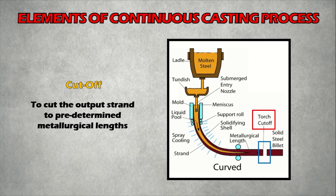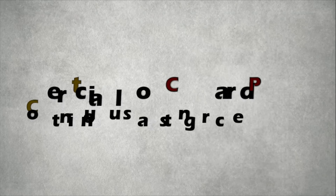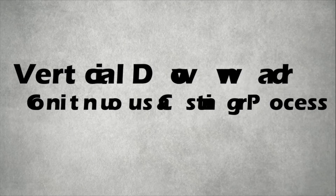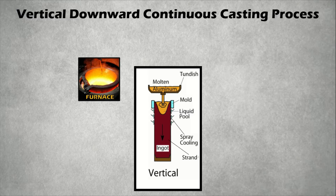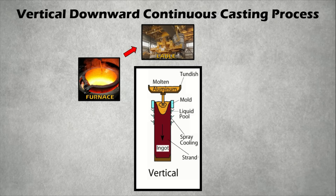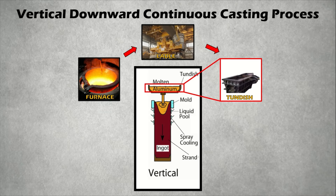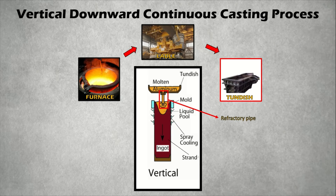Now, as we know the basic elements of the continuous casting process, let's understand the working. Here, the vertical downward continuous casting process will be explained. Molten metal in the furnace is tapped into the ladle at the correct predetermined temperature. The ladle is transported to the top of the continuous casting machine. Usually two or more ladles are used on a single casting machine to provide a sufficient continuous supply of molten liquid metal. From the ladle, the hot metal is transferred through a refractory pipe to a holding bath called a tundish. The tundish allows a reservoir of metal to feed the casting machine, acting as a buffer and smoothing out flow to regulate metal feed to the molds.